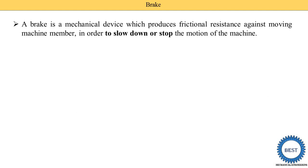In our vehicles, such as a bike or a four-wheeler, we use the brake to reduce the speed of the vehicle or stop the vehicle. The speed is reduced or we stop the vehicles by applying the brake, and when the brake is applied, some frictional resistance is produced against the moving machine members.